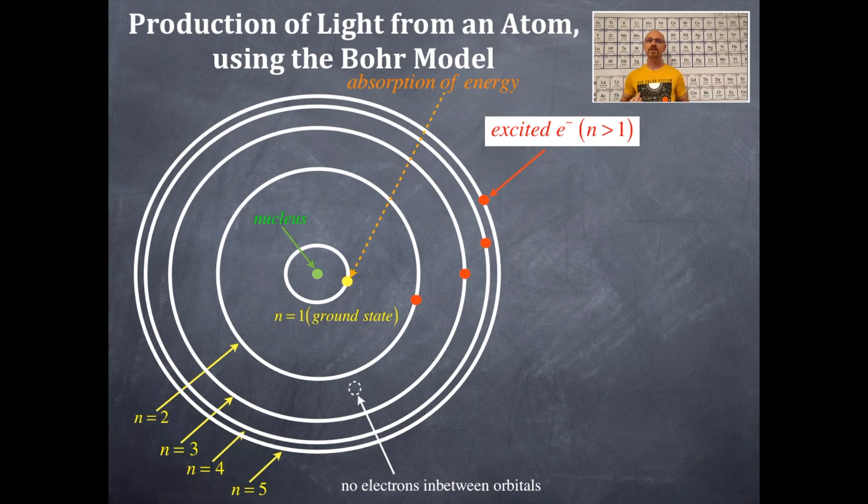They can only go on the orbitals themselves. So, just like I'm wearing my solar system here, we have the planets are orbiting the sun. And these electrons are orbiting the nucleus just like the planets are orbiting the sun in these nice beautiful circles.